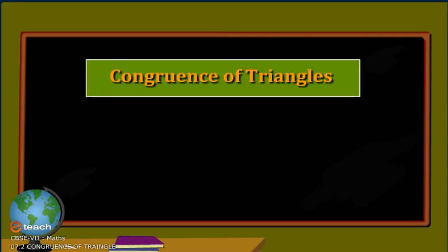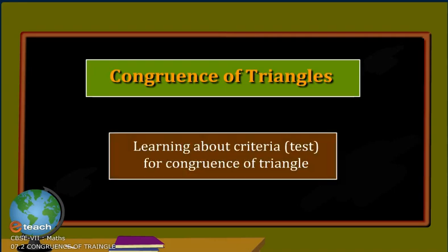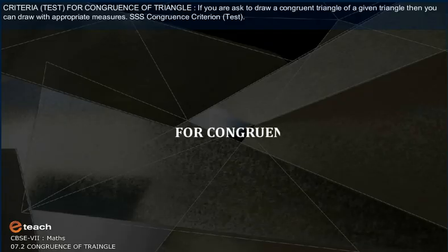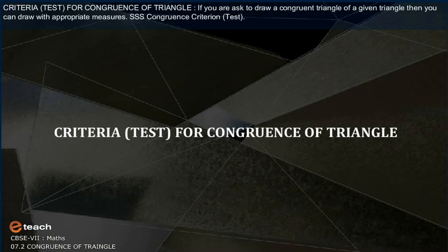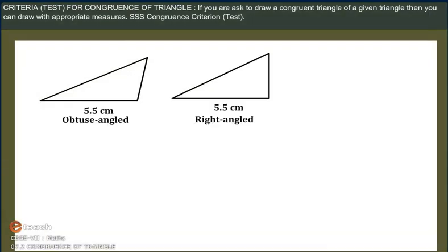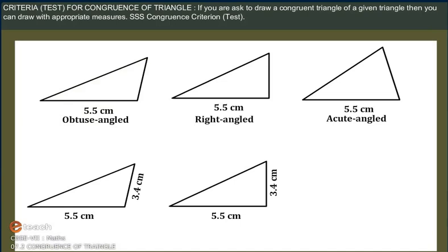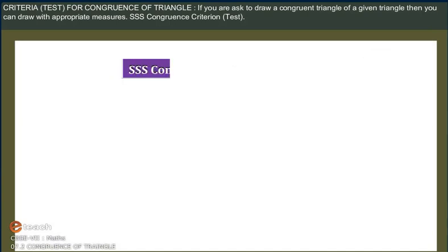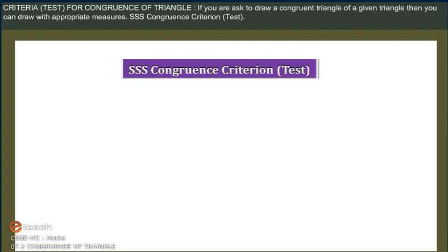Triangles. Learning about criteria, i.e., tests for congruence of triangles. If you are asked to draw a congruent triangle of a given triangle, then you can draw it with appropriate measures. S-S-S Congruence Criterion Test.